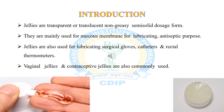Jellies are also used for lubricating surgical gloves, catheters, and rectal thermometers. Most commonly used jellies include vaginal jellies and contraceptive jellies. Basically, jellies are thin transparent or translucent non-greasy preparations meant for external application.